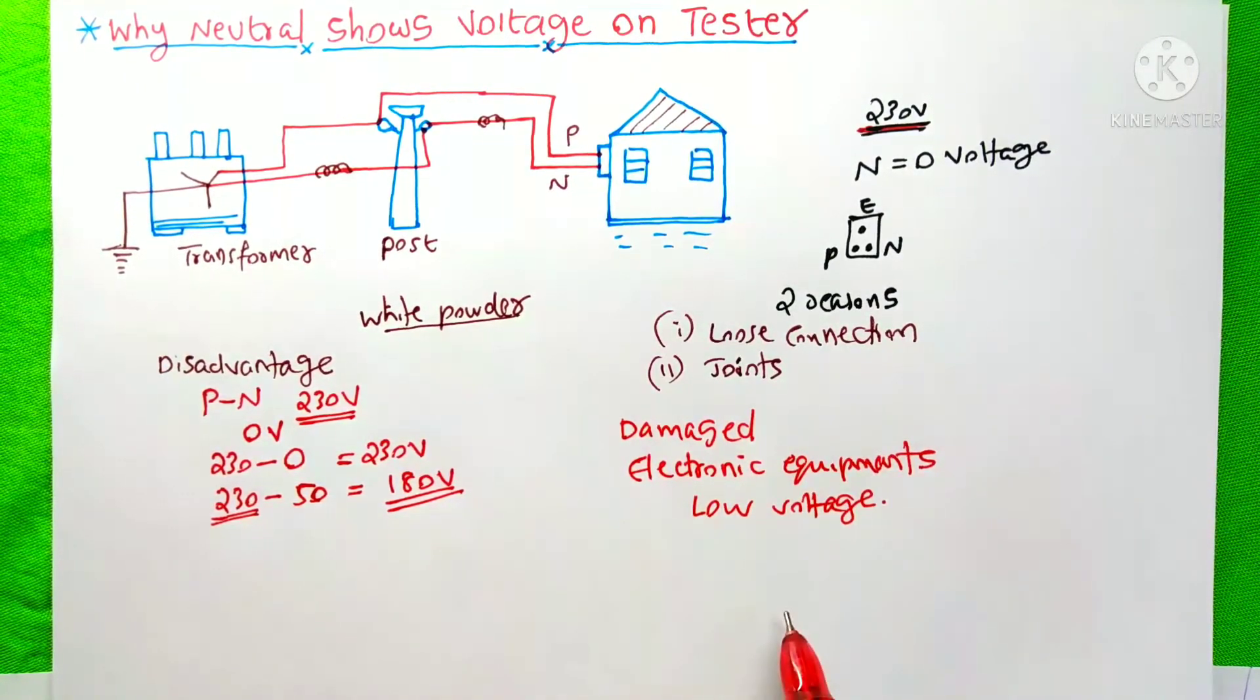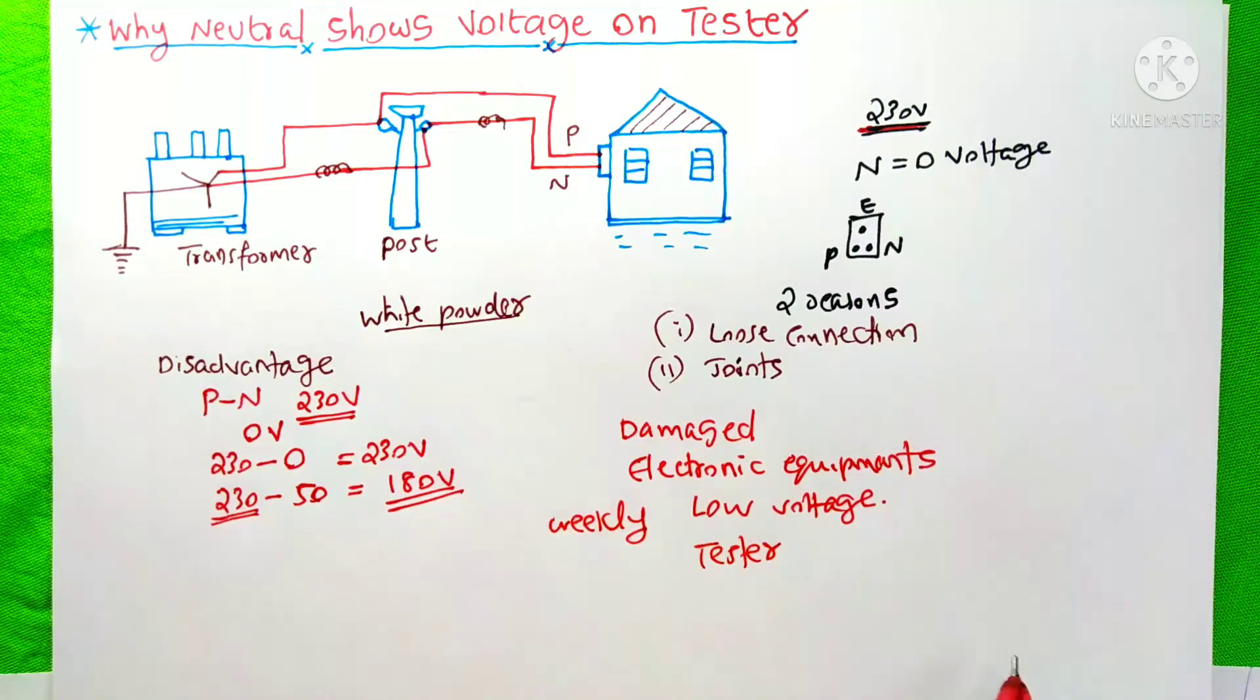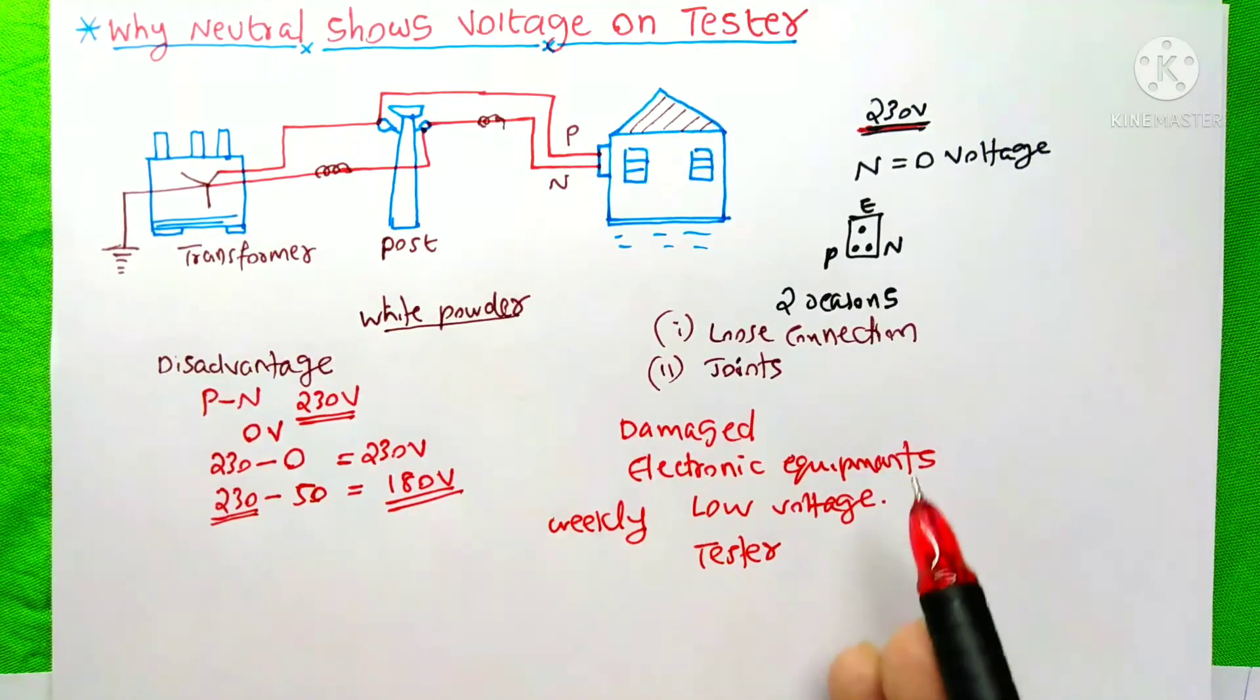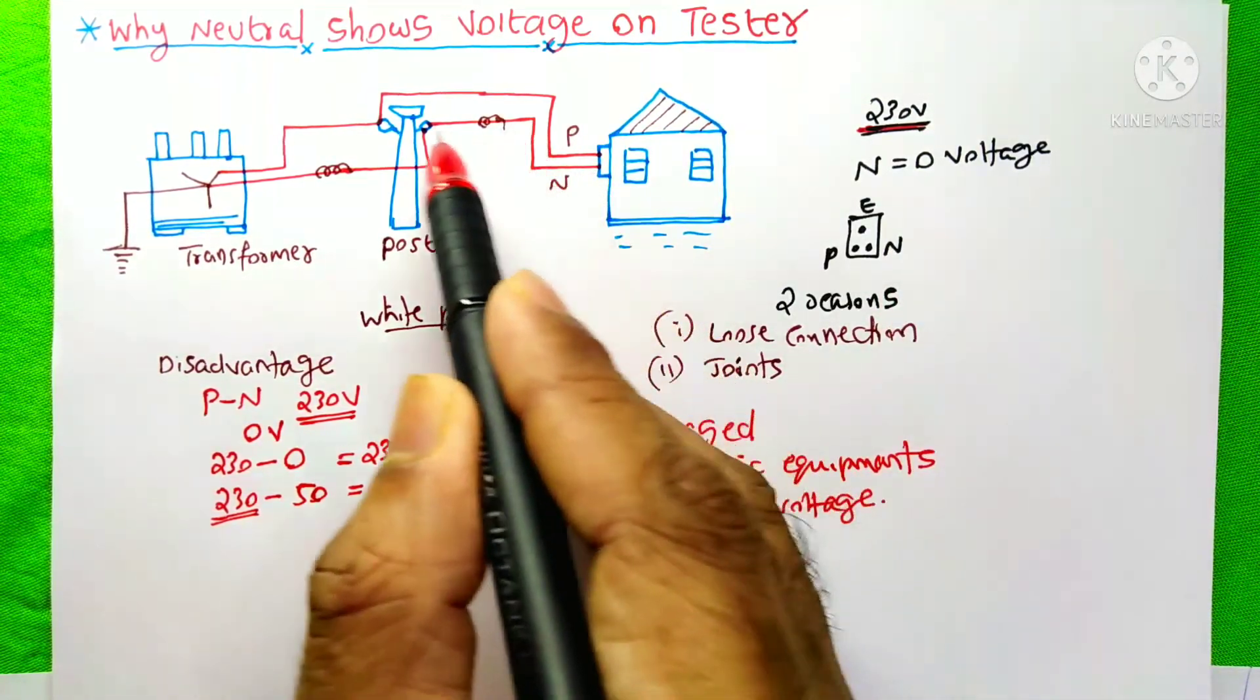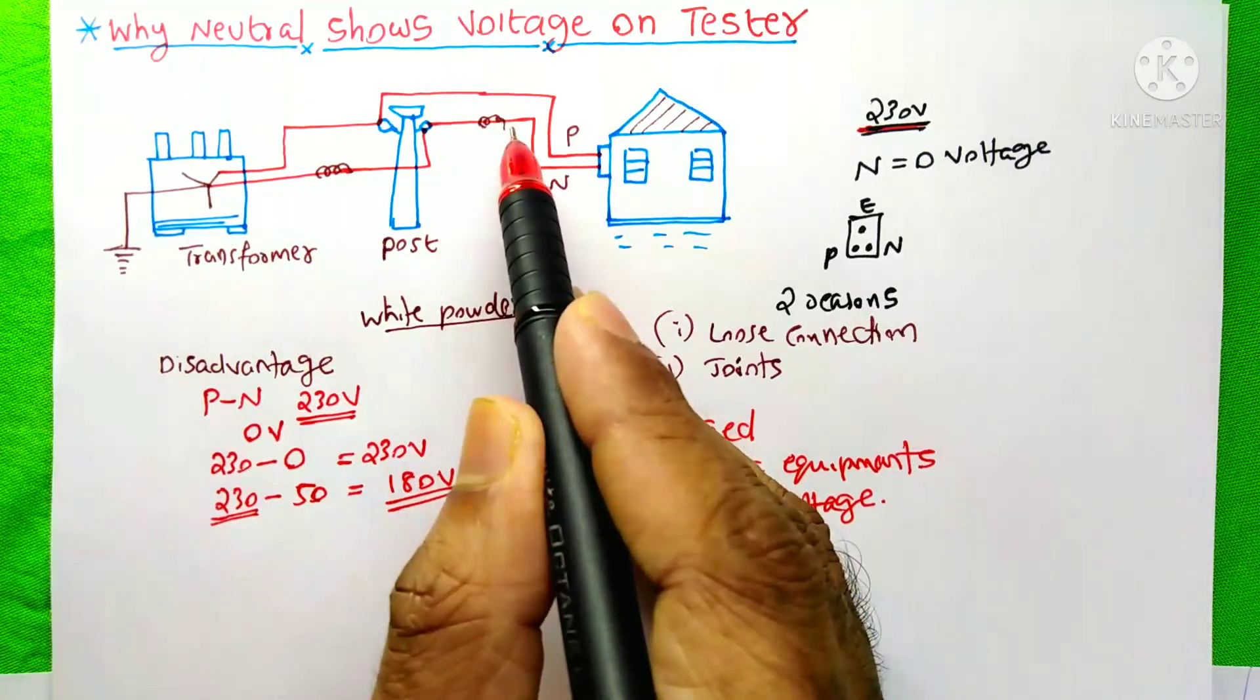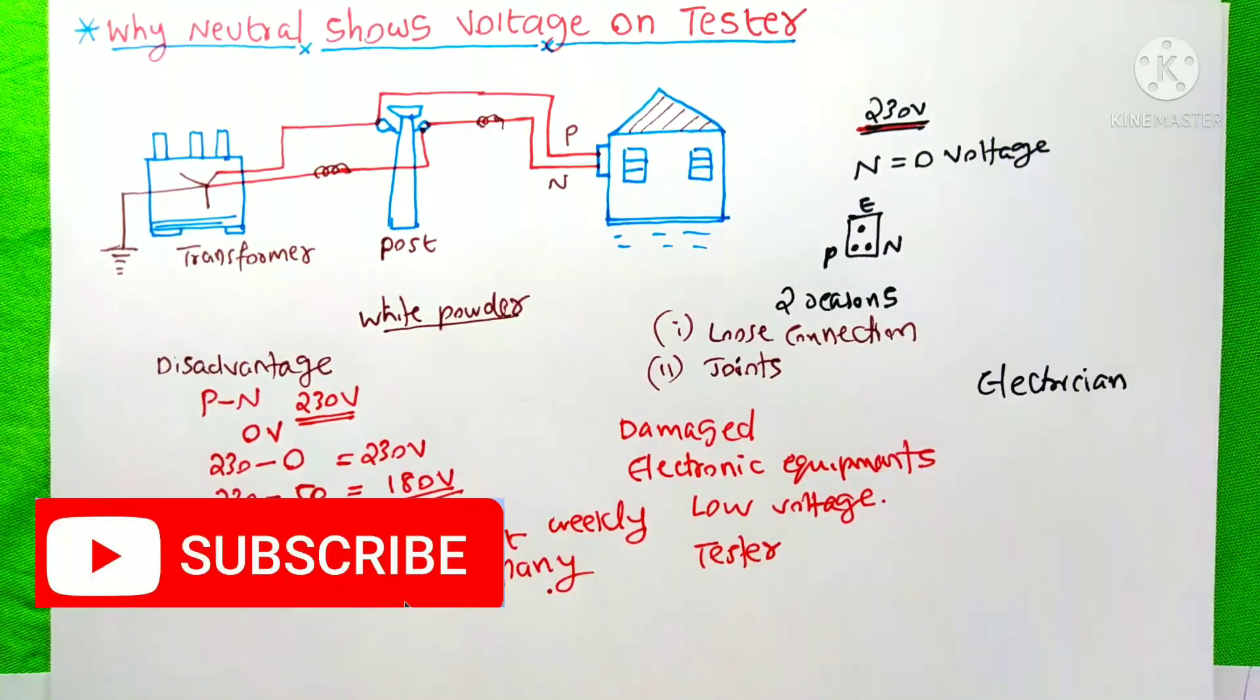So, to avoid this situation, my recommendation is weekly, you need to check your home socket with a tester and find out whether it is showing the voltage on the neutral terminal. If it is showing any voltage on neutral, then you need to check your service wire from the electric post. If you find any joint over here, you immediately inform to the government utility company. I hope you have understood this topic.